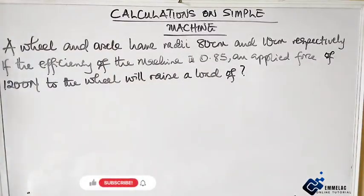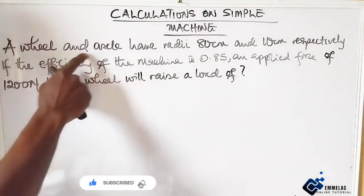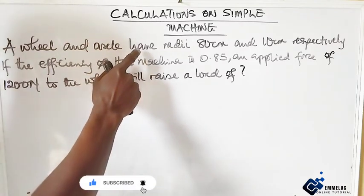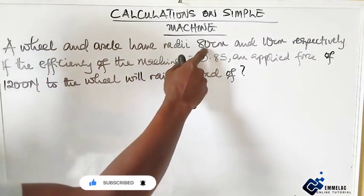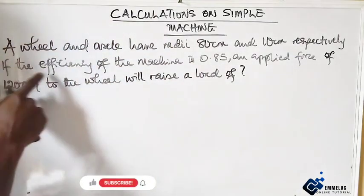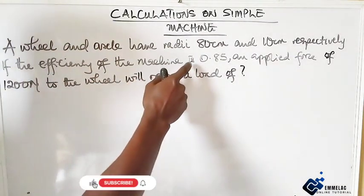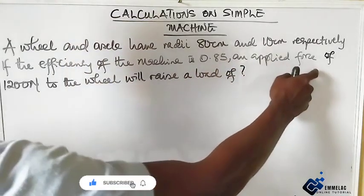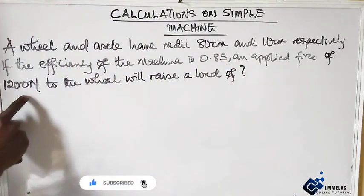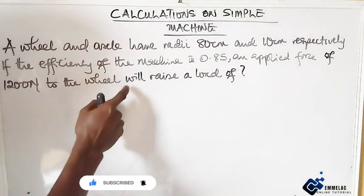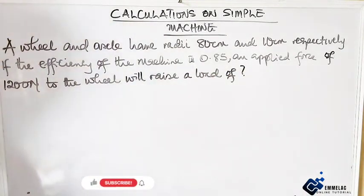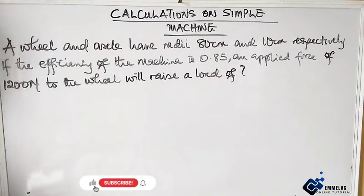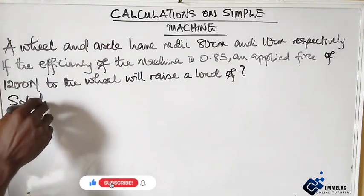Welcome to MLive online tutorial. Before us is this question on a simple machine. A wheel and axle have radii 80 centimeters and 10 centimeters respectively. If the efficiency of the machine is 0.85, an applied force of 1200 Newtons to the wheel will raise a load of what? How do we get started to solve this?